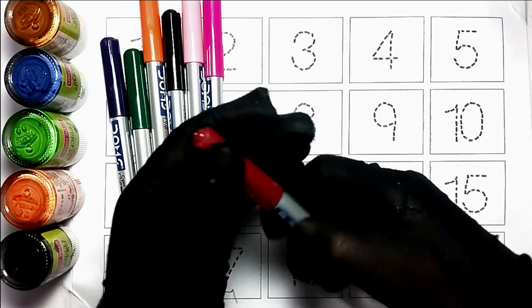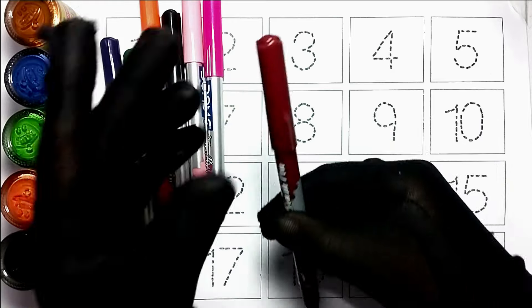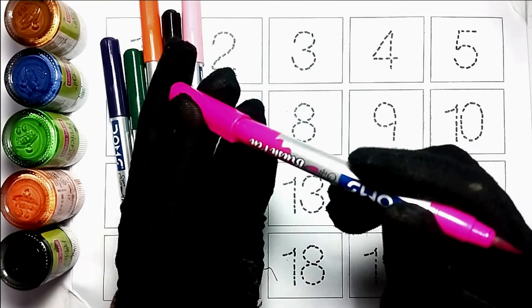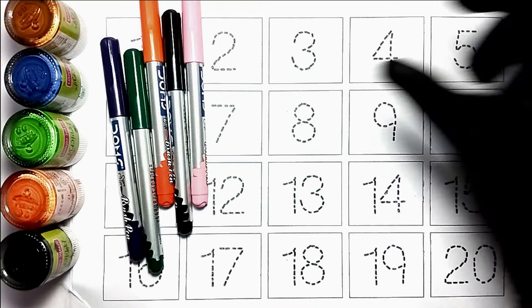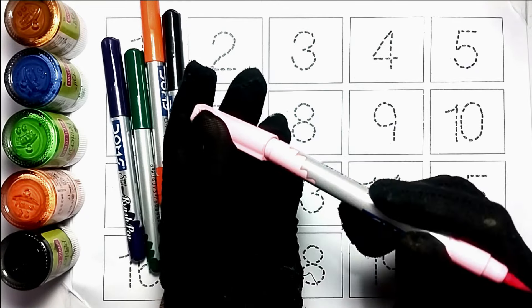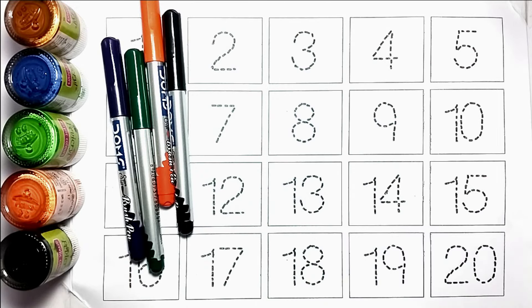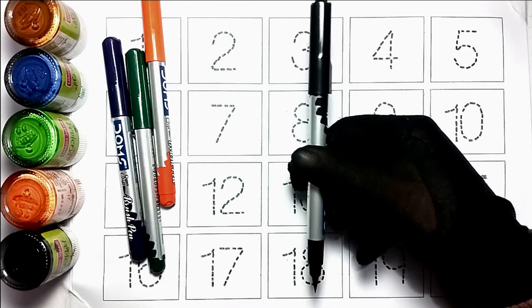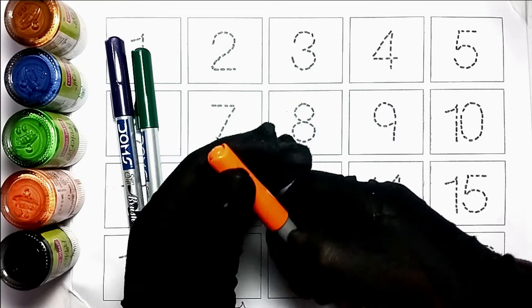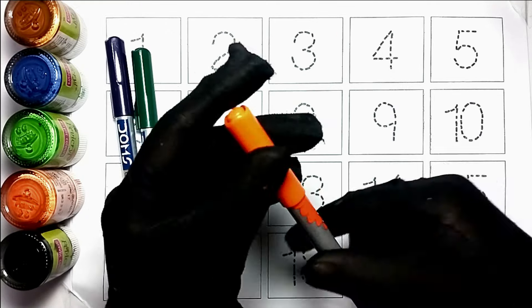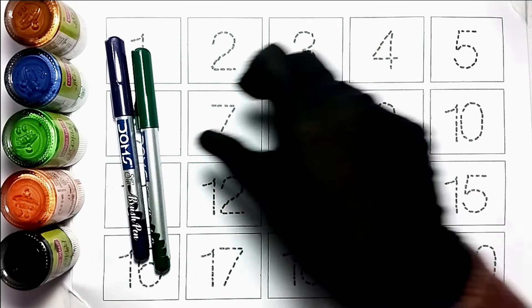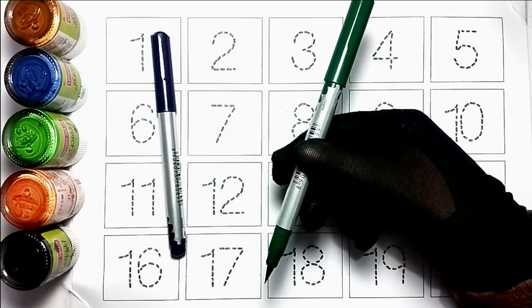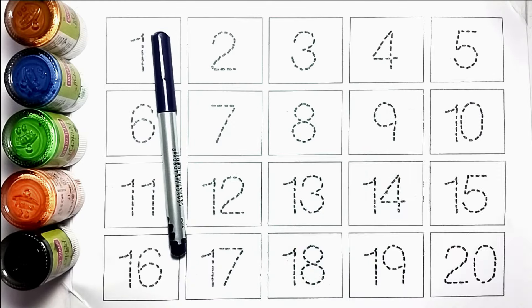Here is brown color. This is pink color. This is green color. This is purple color.